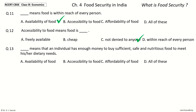Question 13: The answer is affordability of food. So affordability of food means that an individual has enough money to buy sufficient, safe, and nutritious food to meet his or her dietary needs.